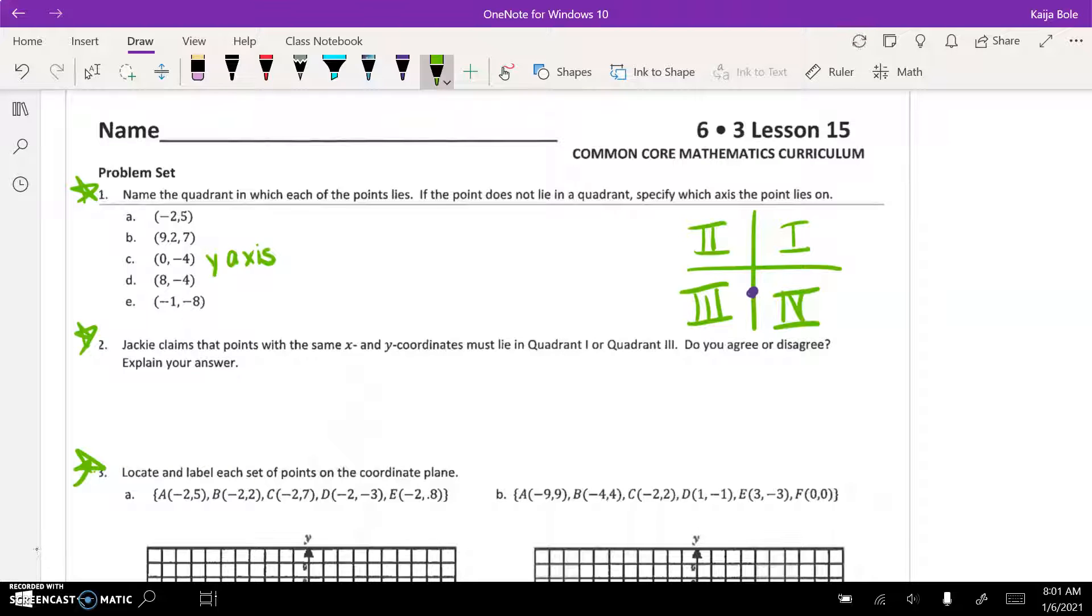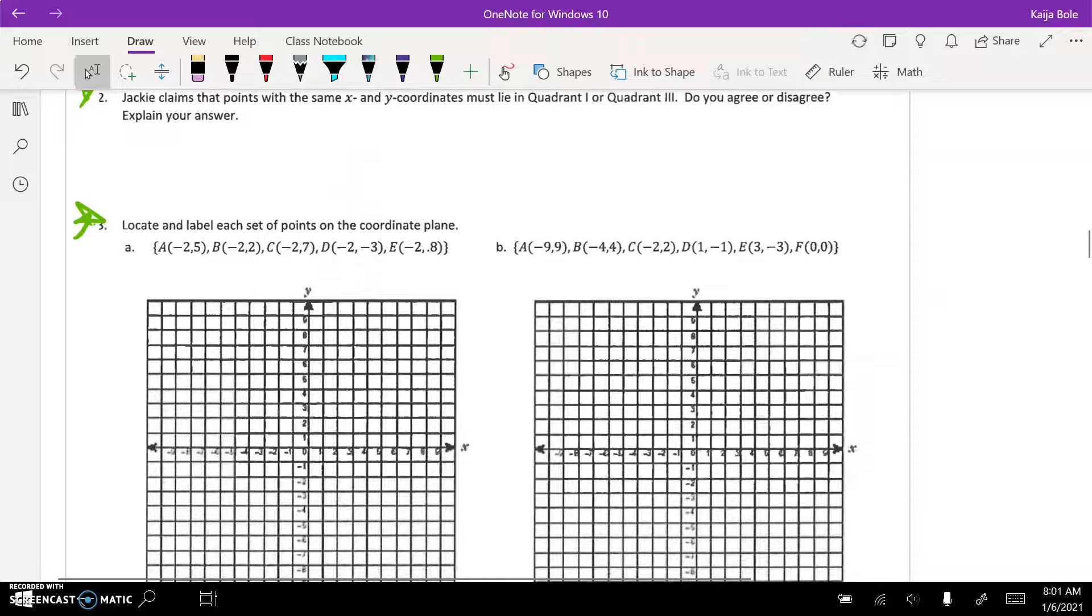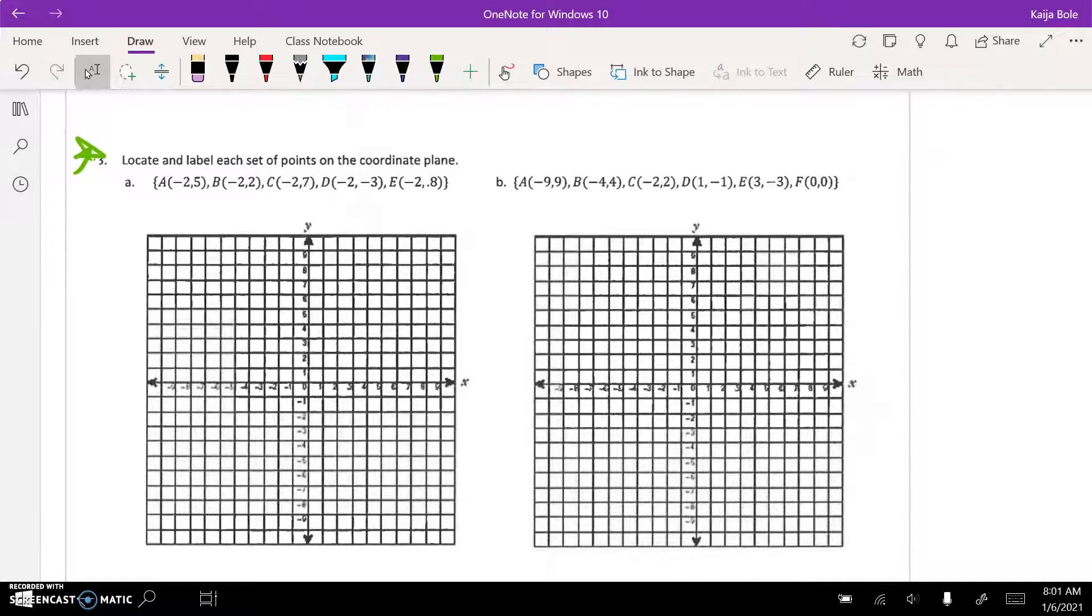All the rest of them lie in a quadrant. Number two, use a picture. Three, you're just plotting the points.